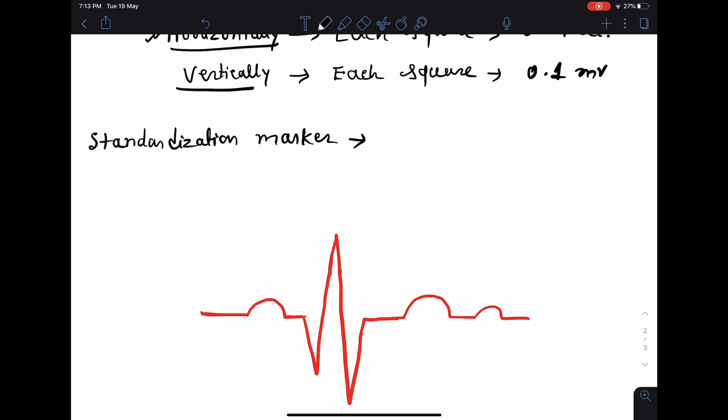Now whenever we are going to read an ECG, first of all you should have a look at the standardization marker, which is also known as calibration marker. The marker will look like a square wave with 10 mm of amplitude. If the amplitude of the standardization marker is either more or less, then the amplitude of P wave, QRS complex, and T wave all will be either larger or smaller. So it is very important that you should look at the standardization marker of the machine and then comment on the ECG.